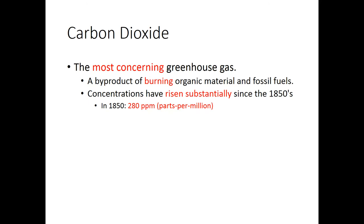In the 1850s — before the Civil War, before urbanization was really a thing, just as the Industrial Revolution was getting going — carbon dioxide concentrations were around 280 parts per million. To visualize this: imagine 1 million molecules of atmosphere spread on a table; of those 1 million, 280 are carbon dioxide. Well, now we're actually over 400 parts per million — we've increased from 280 to over 400 ppm. Just trust me, it's scary.